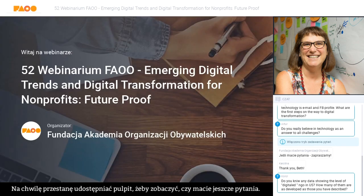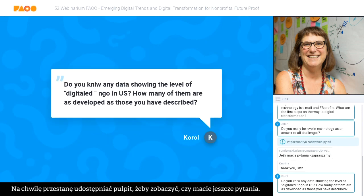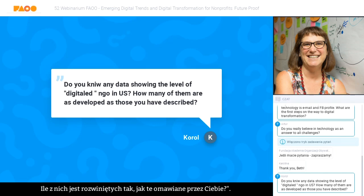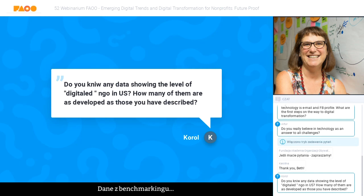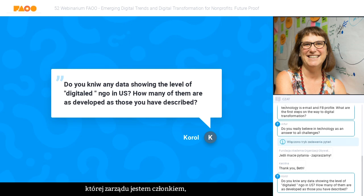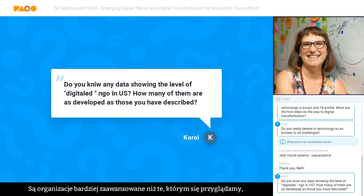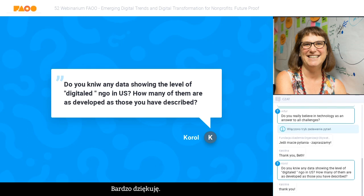A final question: do you know of any data showing the level of digital NGO development in the US and how many are as developed as the examples described? The ones I described are early adopters. If you looked at the data it would probably be a bell curve — fewer at the very beginning, fewer at the very end, and most in the middle. The NTEN — the Nonprofit Technology Network, on whose board I sit — does have a benchmarking tool looking at this for US organizations. There are fewer cases of the advanced ones, but we look to them for learning and inspiration.